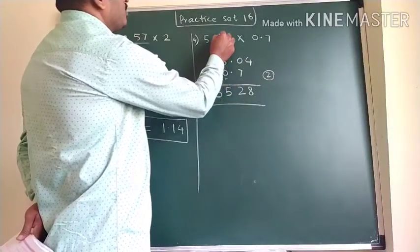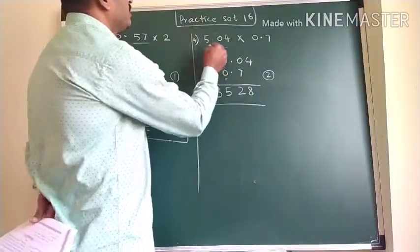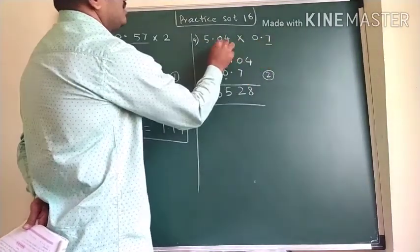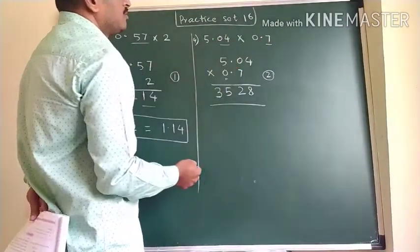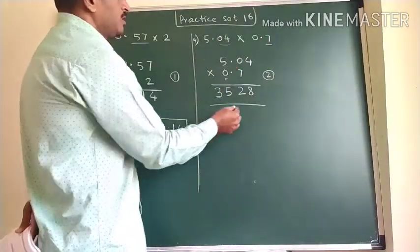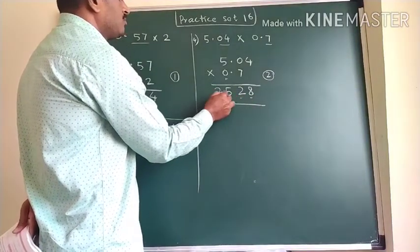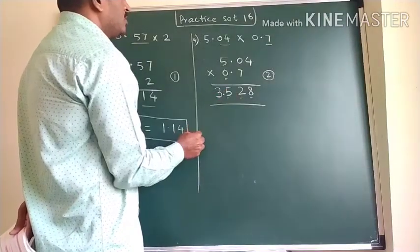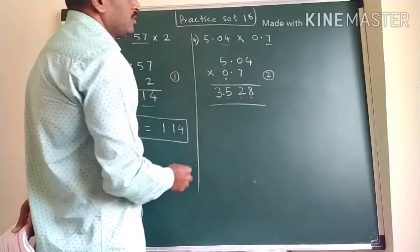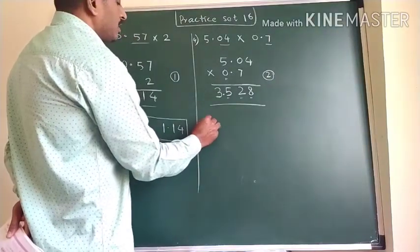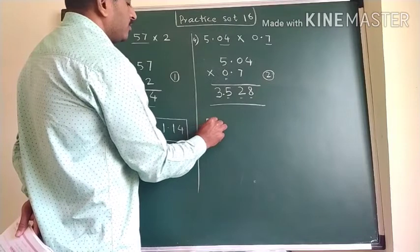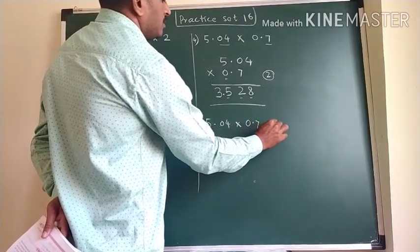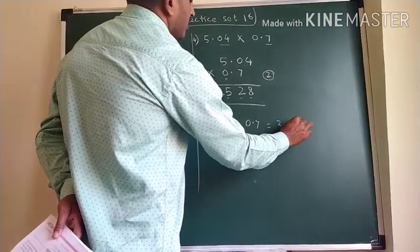In this answer we have to provide the decimal point. First we count decimal places: here 1 decimal place, here 2 decimal places — 1 plus 2 is 3 decimal places we have to leave in the answer. So we count 1, 2, 3 decimal places and put the decimal point before this 5. So our answer becomes 3.528. Therefore, 5.04 × 0.7 = 3.528.